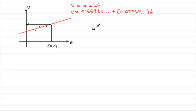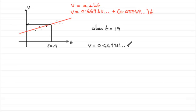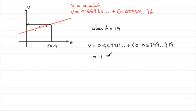Very easy then, so I would just come in with when t equals 19 and just sub it in. v is going to equal — put those values there — 0.669311. I've used the unrounded versions; I'm not going to take any chances on using rounded numbers. If we take those values and multiply that by the 19, do that on your calculator and what you get is 1.3814 and so on.